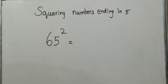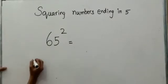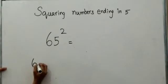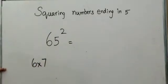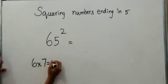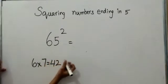The number before 5 is 6. One more than 6 is 7. Find the answer to 6 times 7. 6 times 7 equals 42. Write 42 over here.